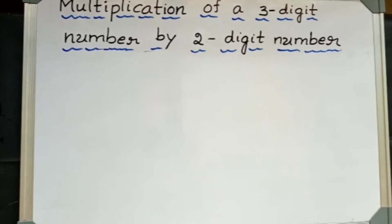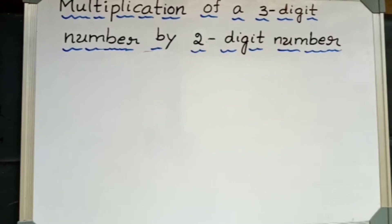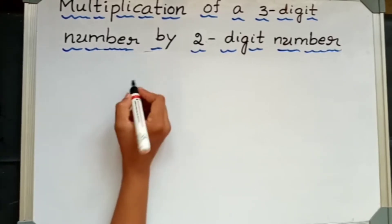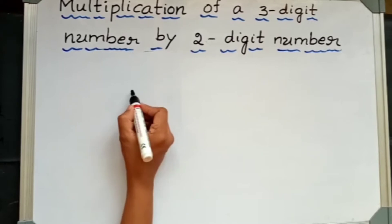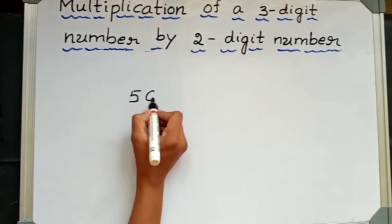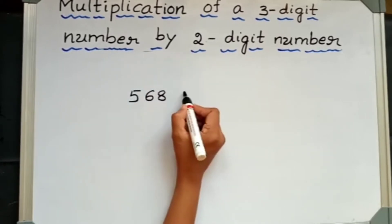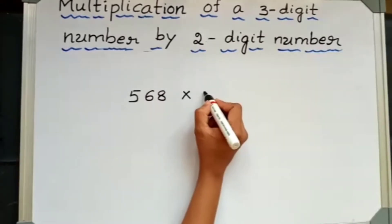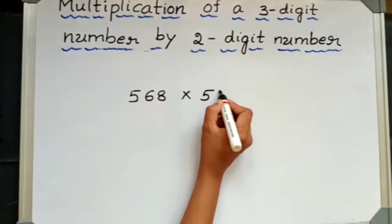Namaste. Welcome to the class. In this class, let's multiply a three-digit number by a two-digit number. Let me write the three-digit number: 568 into 52.